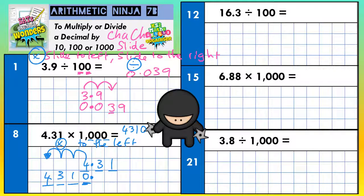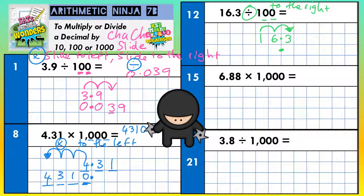Question 12. We've got 16.3 divided by 100 — divide to the right. All the digits are going to move 1, 2 places to the right, because 100 has two zeros. Start with 16.3; your decimal point is not going to move, so put that in on the line underneath. The 1 is going to go 2 places to the right, so the 1 actually ends up underneath the 3. If it goes 1, 6, 3 in the question, it goes 1, 6, 3 in the answer. The only thing missing is the zero in front of the decimal point. Final answer for question 12: 0.163.